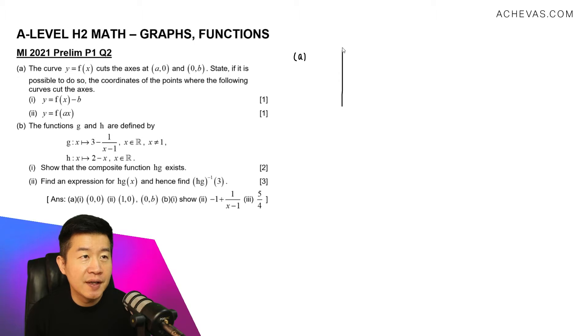So let's say here we have the y-axis and let's say this is the x-axis. I'm going to sketch my arbitrary curve which is this over here, and this point here, which is the x-intercept, will be (A,0), and this point here will be (0,B). So in part 1, the curve is going to undergo the transformation f(x-b).